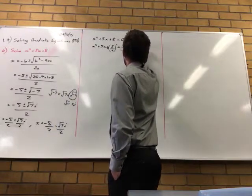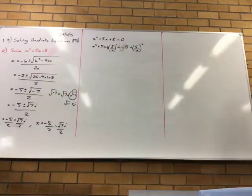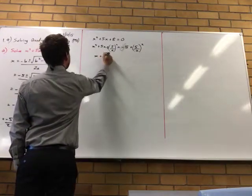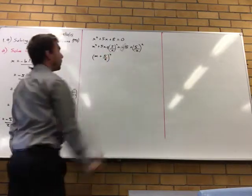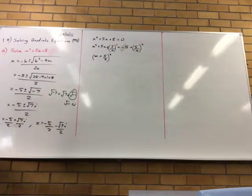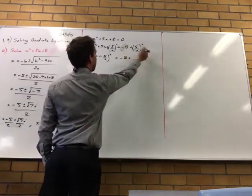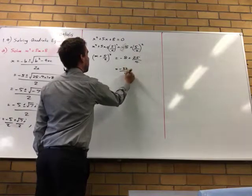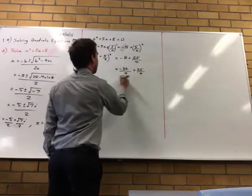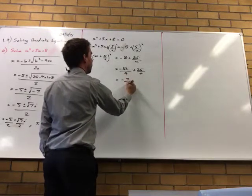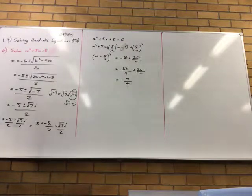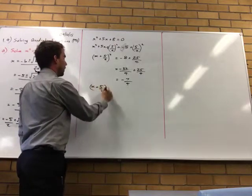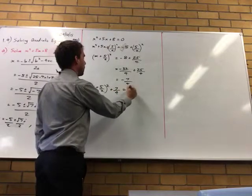So, half that coefficient and square, so we've got to complete the square. Alright. So that means x + 5/2, all squared, which is -8 + 25/4. So, -32/4 + 25/4, which is -7/4. So this means x + 5/2, all squared + 7/4 is equal to 0.